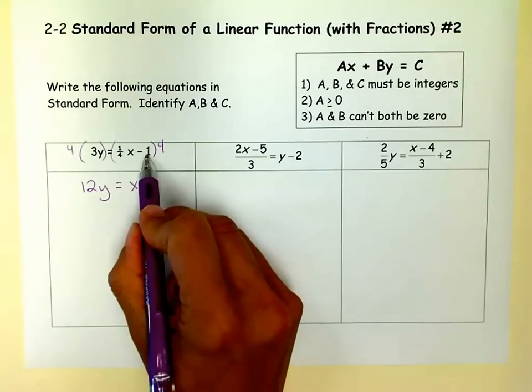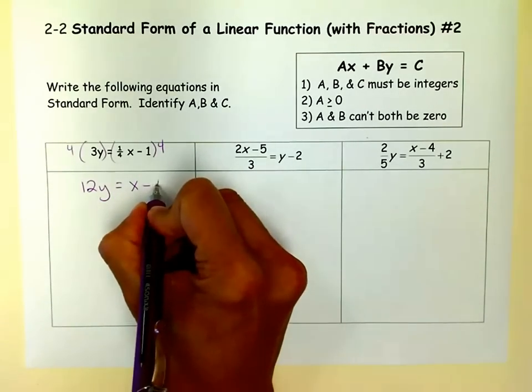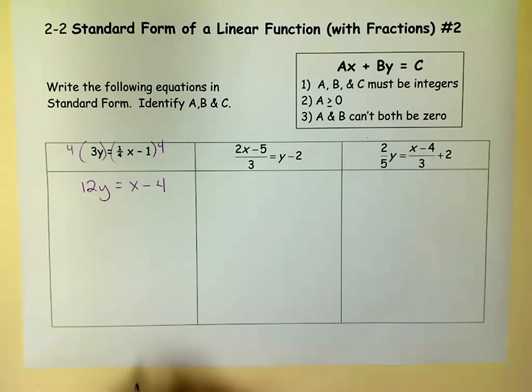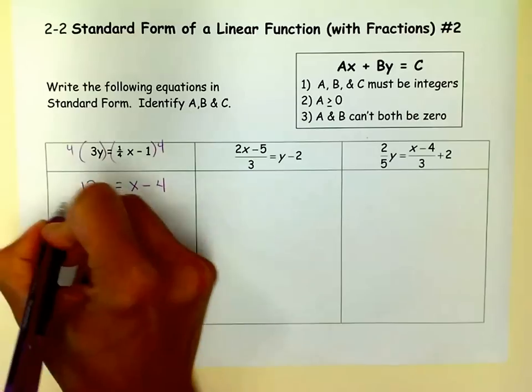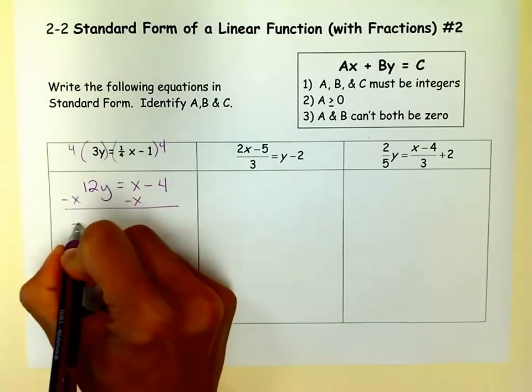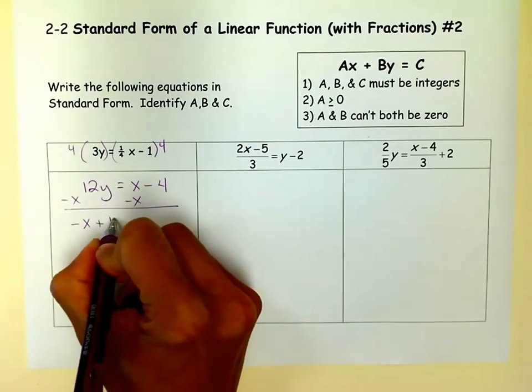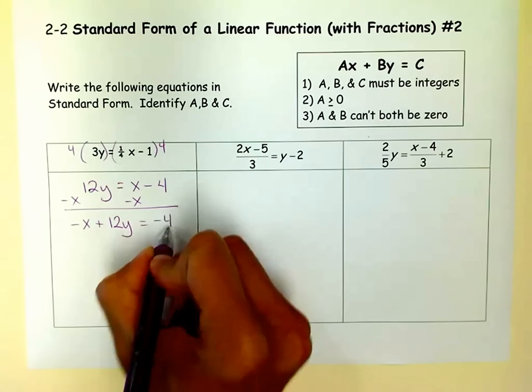But I also have to multiply this, and negative 1 times 4 is negative 4. So now my fractions are gone, but I still have an x over here. So I need to minus x from both sides. So on this side, remember, I cannot combine x's and y's, so it's negative x plus 12y equals negative 4.